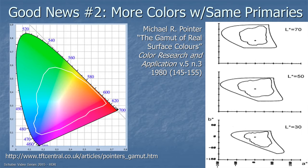Good news number two: you can get more colors without changing the primaries in the TV set. A color diagram showing the range of surface colors — from a 1980 paper by Michael Poynter — demonstrates that the shape of visible colors changes with different brightnesses. At higher brightness, you can offer more colors without changing the color primaries of the display at all. You can get a saturated bright yellow, for example.